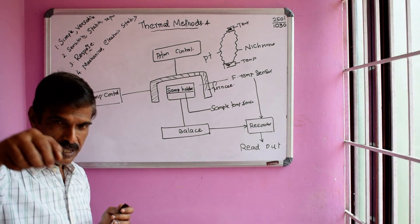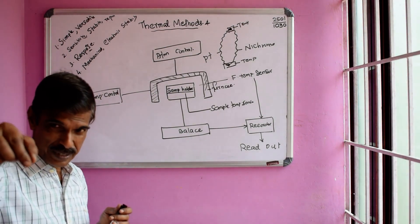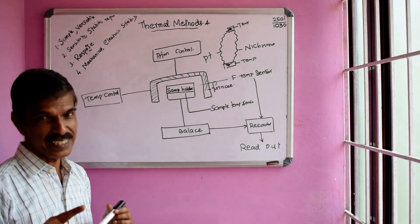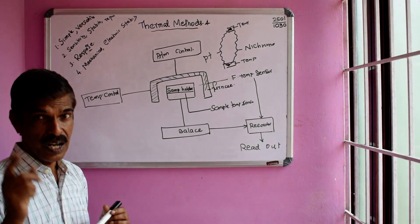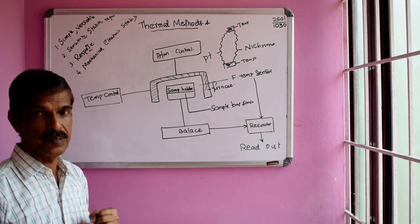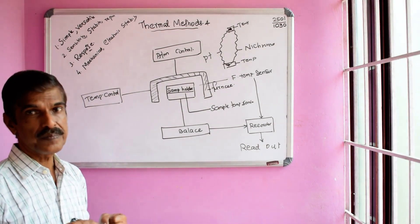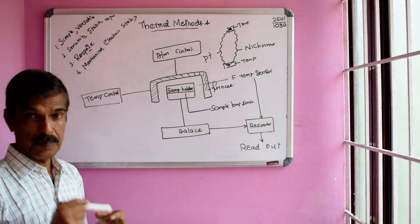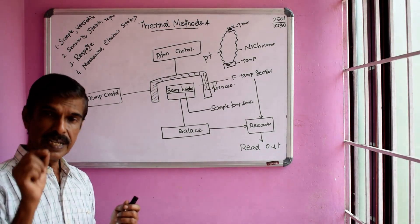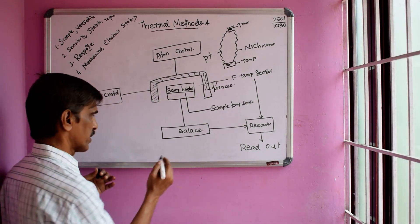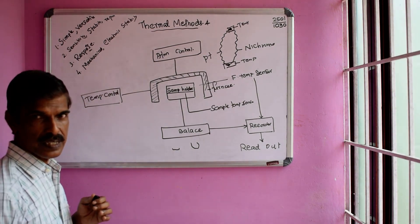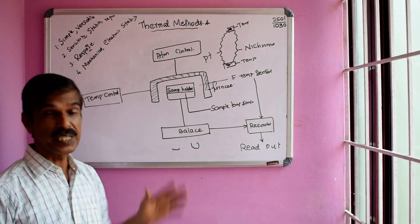The sample holder geometry also matters. The sample holder should be made of a stable, unreactive material — usually platinum, or alternatively alumina, ceramic, or glass depending on the temperature range. The sample holder may be a shallow pan or a deep crucible.